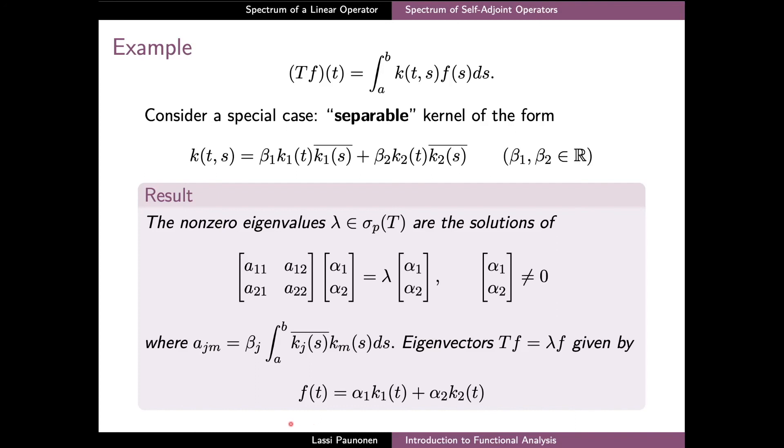These eigenvectors also determine the actual eigenfunctions of T corresponding to λ, so that we get an eigenfunction f corresponding to λ if we take linear combinations of the functions k₁ and k₂ with the coefficients α₁ and α₂ coming from the eigenvector of the finite dimensional eigenvalue problem.